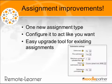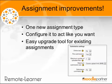Before 2.3, you had to choose which of the assignments suited your needs before configuring it, and if you decided to change that midway through, you had to start all over again. No more with 2.3. The assignment settings can be configured just within the one activity to enable online text, file upload, comments, and uploading a file as feedback.